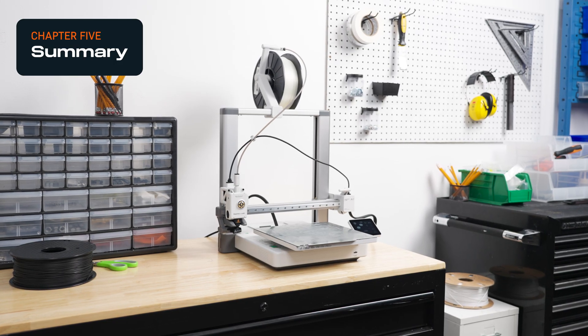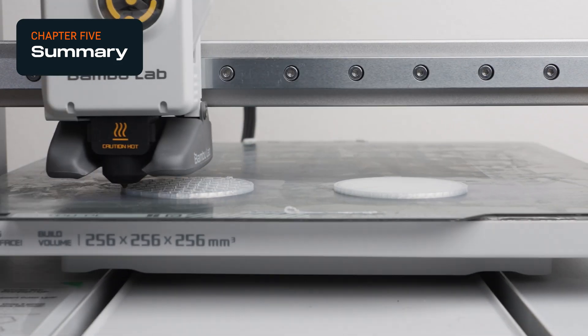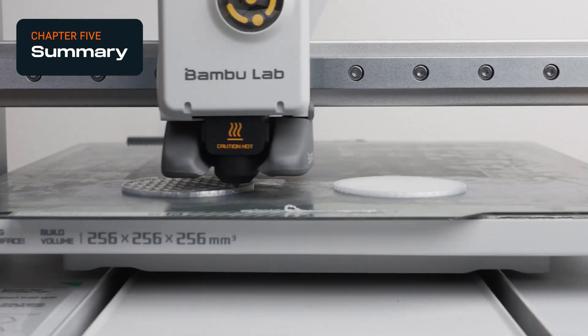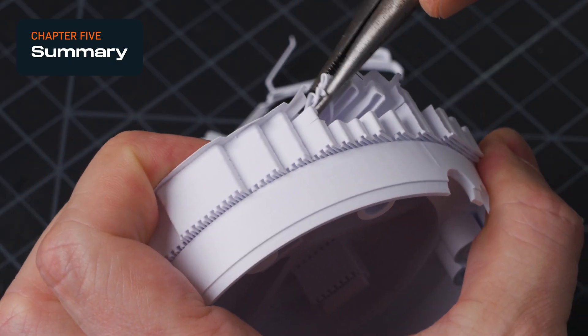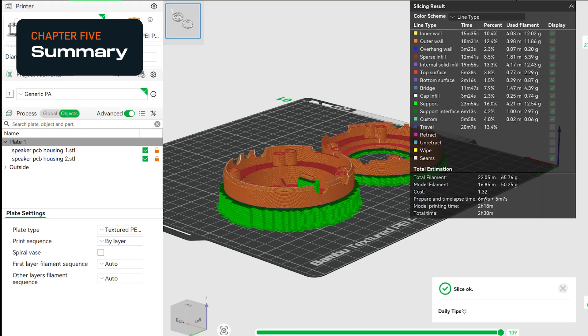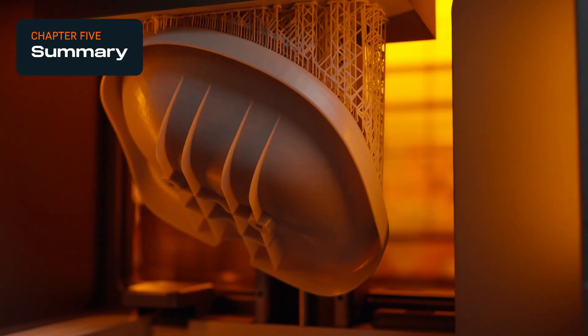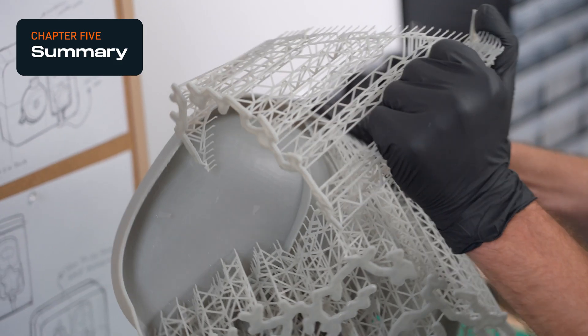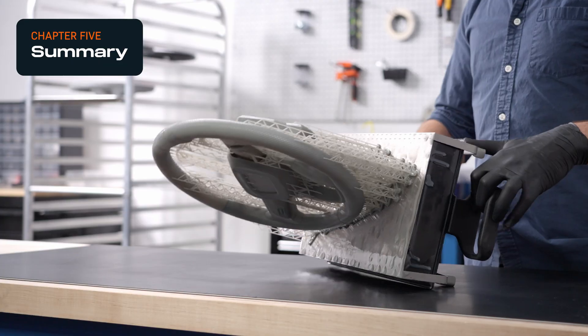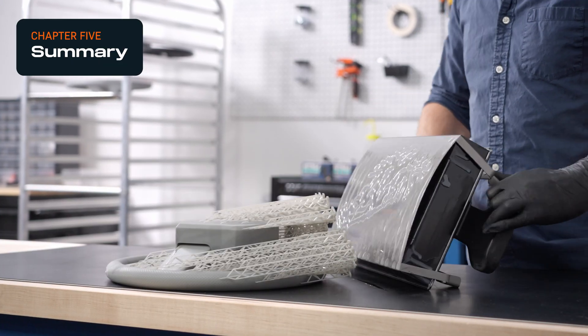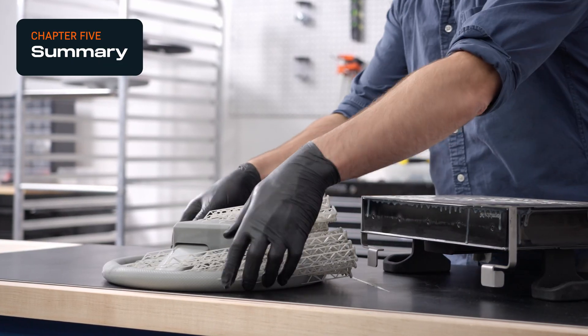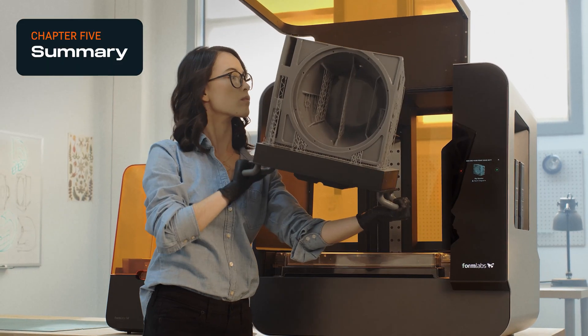To sum up, FDM is the easiest 3D printing process for getting started and for simple designs, but it can be complex and time-consuming for more advanced applications. The SLA 3D printing workflow does require more post-processing steps than FDM, but most of them can be automated, and producing complex, presentation-ready parts is easier than with FDM.